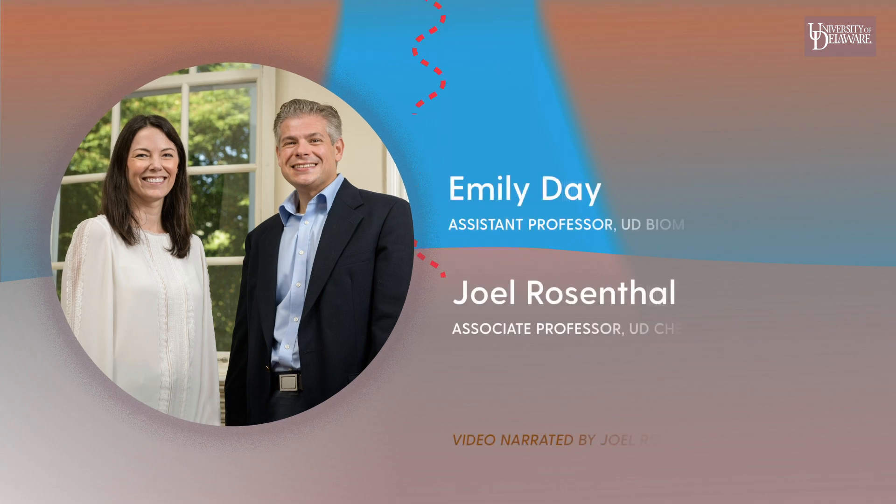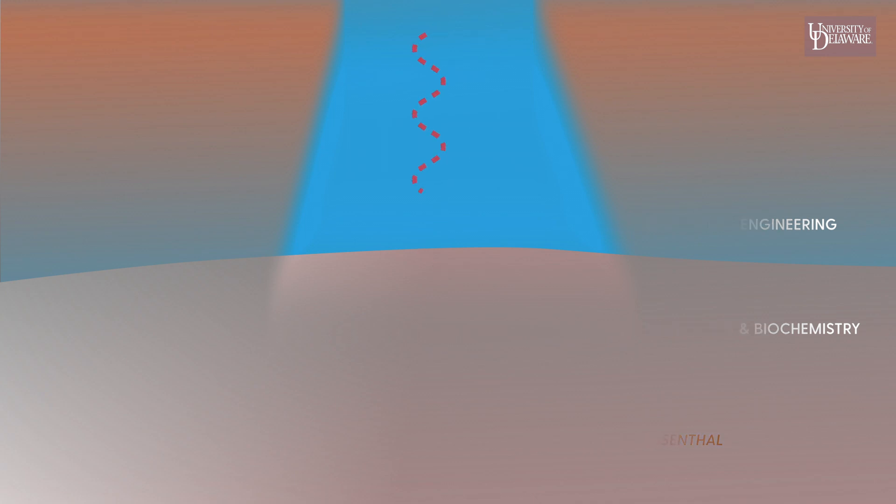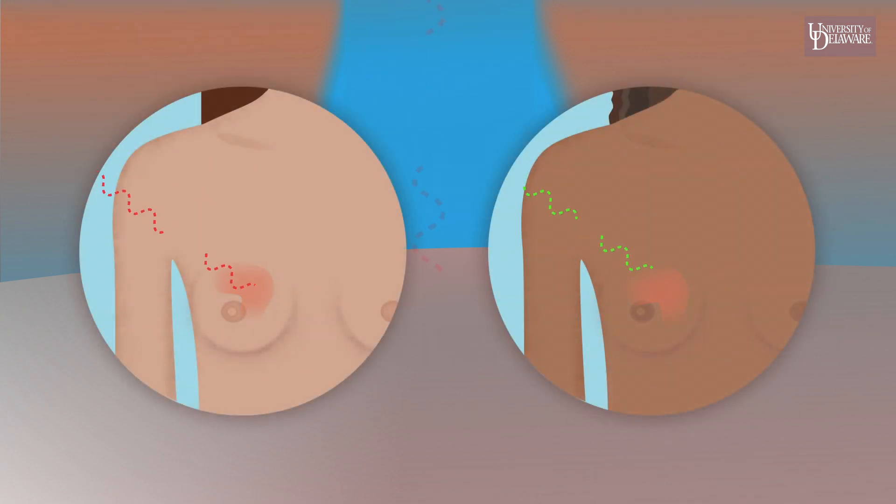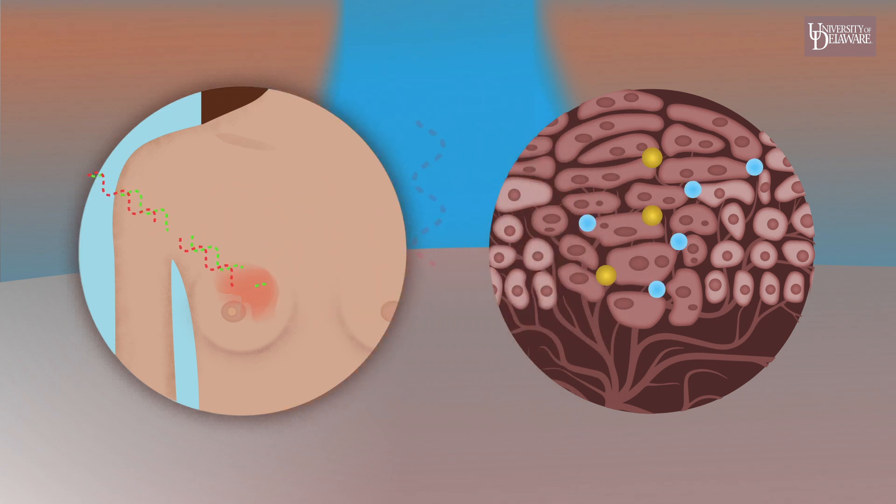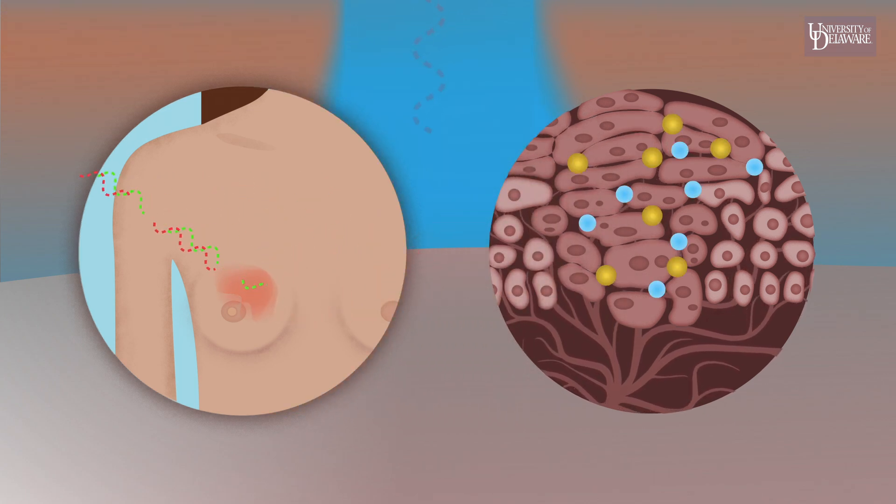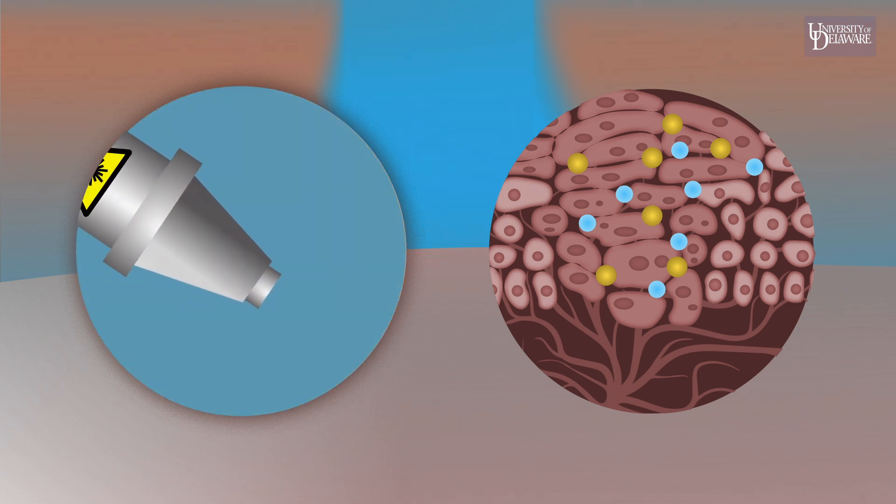University of Delaware researchers have combined these therapies, photothermal and photodynamic, and discovered they work synergistically in triple negative breast cancer cells, requiring lower doses of both agents and lower levels of light. This strategy represents new ground in enabling high-precision cancer therapy, killing cancer cells where the agents and lights are combined at the tumor site.